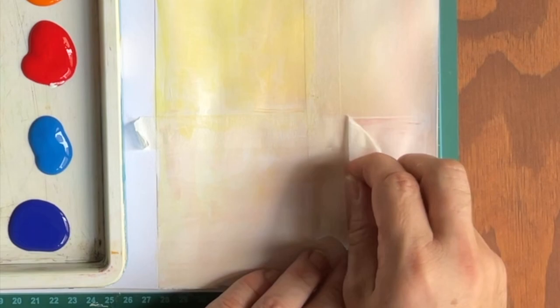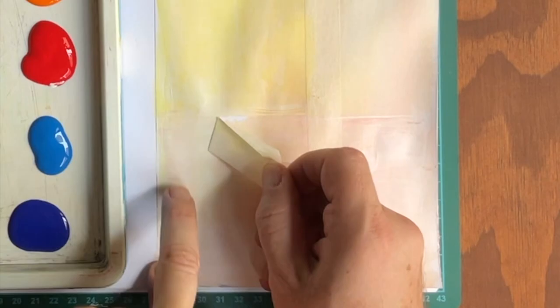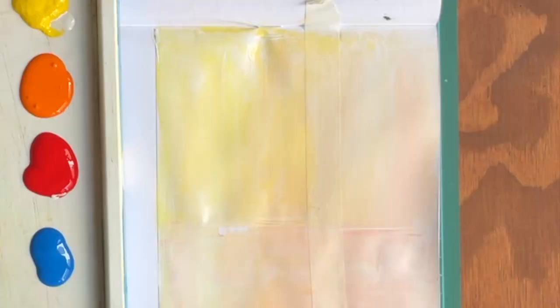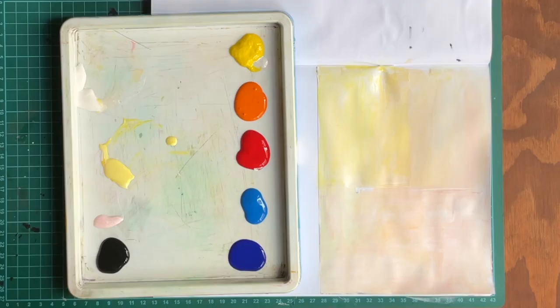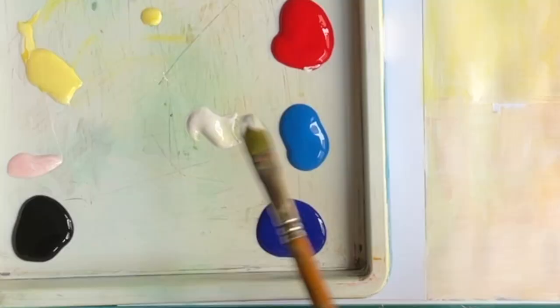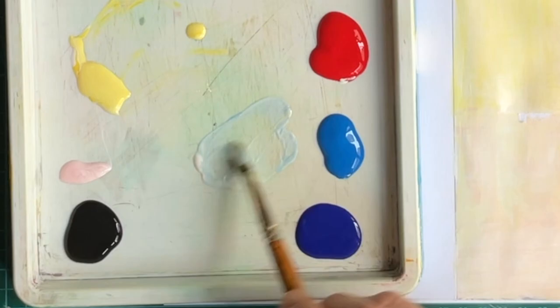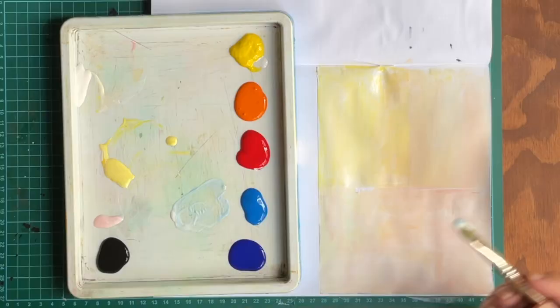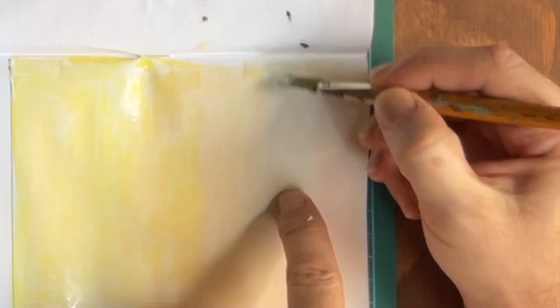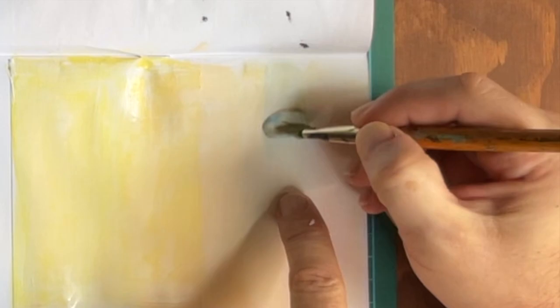To remove the tape, slowly peel it away at a 45 degree angle. If you leave the tape on too long, it sometimes rips the paper. Next, take some white and mix a very small amount of blue. We'll just paint a square in the upper right corner. We'll do this freehand.